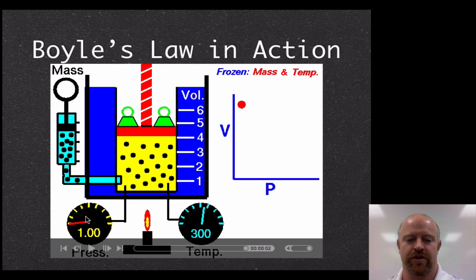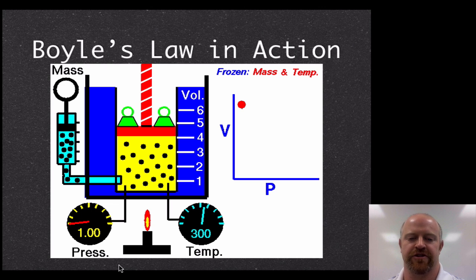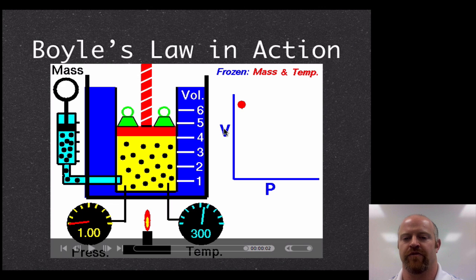We have our pressure over here in atmospheres and our temperature over here in kelvins, and these little weights that we can put on top of the piston to increase the amount of pressure pushing down. We also have a little Bunsen burner that we can change and actually heat that up or cool it down. So we're going to keep mass and temperature constant, we're not going to change the mass, and we're going to see what happens to volume and pressure as they interact with each other.